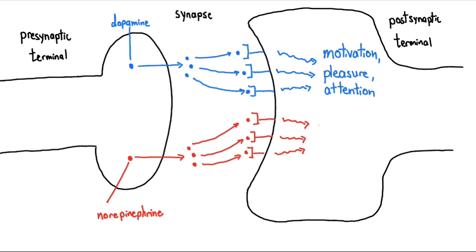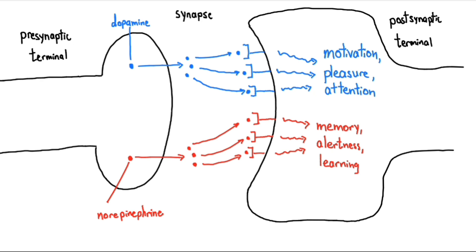Norepinephrine is a neurotransmitter associated with memory, alertness, and learning. Eventually, to prevent overstimulation, these neurotransmitters are removed from the synapse back into the synaptic neurons by transporters.